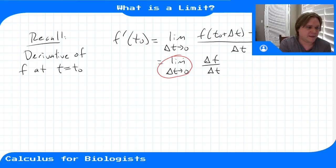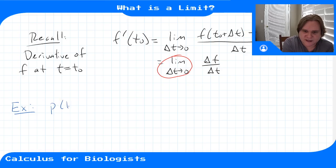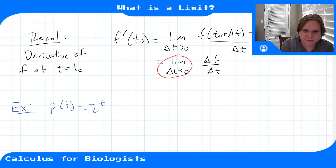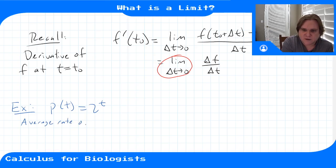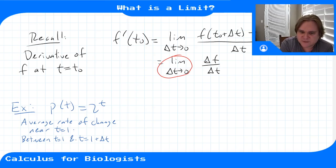To make sense of this definition we need to understand what a limit is. Let's start with an example using our classic population growth function: p of t equals 2 to the t, where population is in millions of cells and t is in hours. We'll look at the average rate of change near t equals 1, considering intervals between t equals 1 and t equals 1 plus delta t.